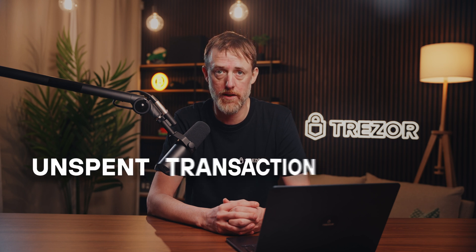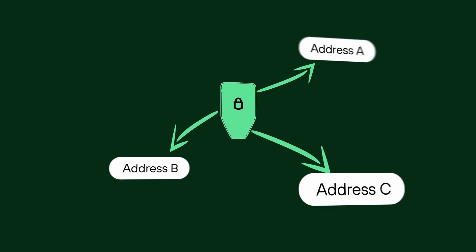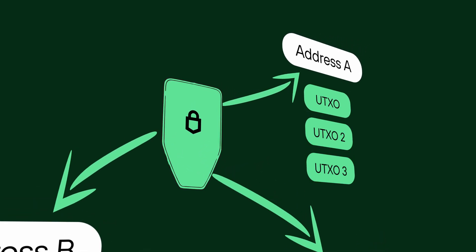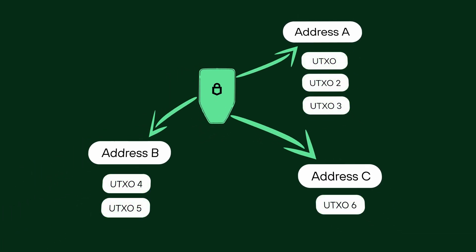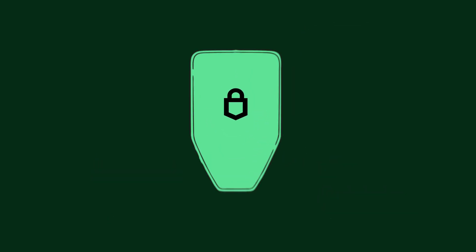UTXO stands for unspent transaction output. It is an amount of Bitcoin that your wallet controls. Your wallet can have multiple addresses, and each address can hold multiple UTXOs. The total sum of these UTXOs is your Bitcoin balance. Each UTXO is like a separate piece of Bitcoin you can spend.